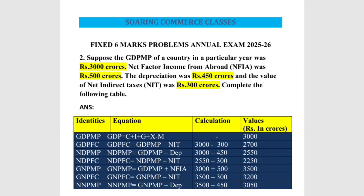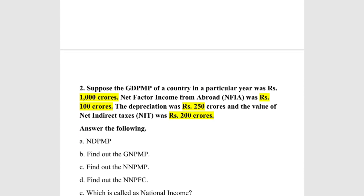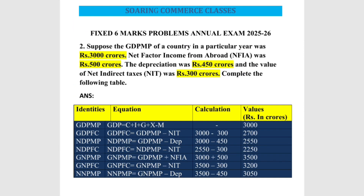In National Income Accounting, we will have two problematic questions — question number one and question number two. Either one question from these two will be asked in the examination. If you learn both questions, you are going to secure a fixed six marks from National Income Accounting.